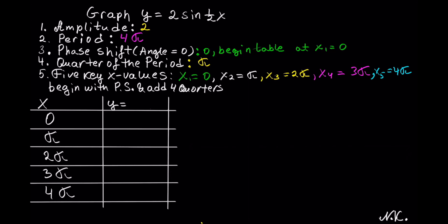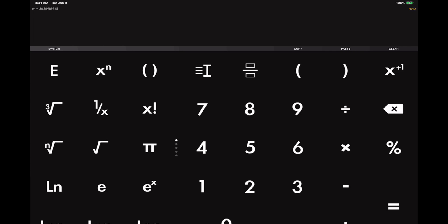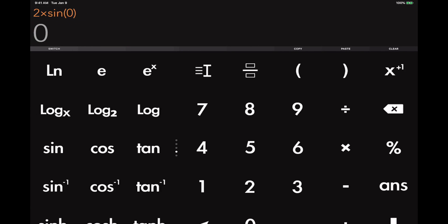In order to complete the table, we substitute these values into 2 sin of 1 half of x. If you see no plus or minus, the graph has no shift, which makes calculating sine values very easy, because unshifted sine begins at 0. When x is 0, y is 0; then it goes to the coefficient, back to 0, then the negative of the coefficient, and ends at 0. We can also substitute directly: 2 times sin of 1 half times 0 is 0. Using a scientific calculator in radians, 2 times sin of 0 equals 0.